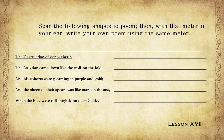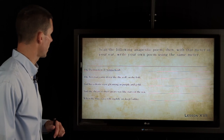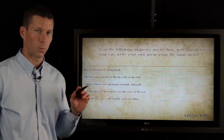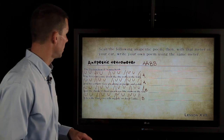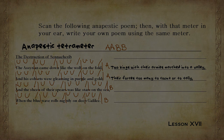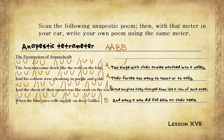Scan the following anapestic poem, then with that meter in your ear, write your own poem using the same meter. We've worked through the Destruction of Sennacherib in our previous lesson. Go ahead and read through this stanza of the poem and see if you can figure out where to place your stresses. We'll look at an example that a student did — the same music but their own content. It says: "Two kings with their armies marched into a valley, their forces too many to count or to tally."